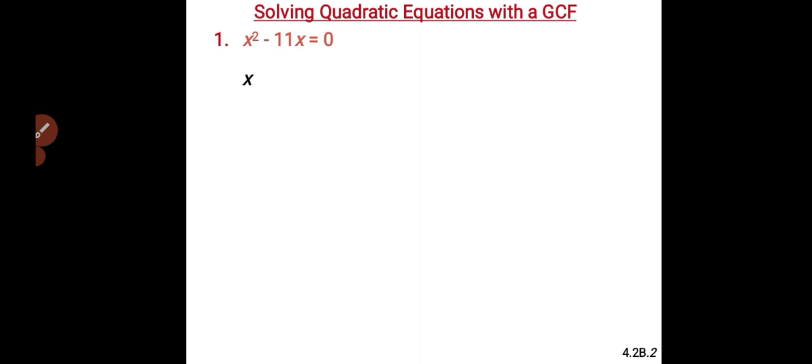Now, solving quadratic equations with factorization. Assuming we have X squared minus 11X equals zero. What is common in X squared and minus 11X? The common factor is X. So we factor X out of the bracket: X open bracket X minus 11 close bracket equals zero. This means X is equal to zero or X minus 11 is equal to zero. Therefore X is equal to zero or X is equal to 11.